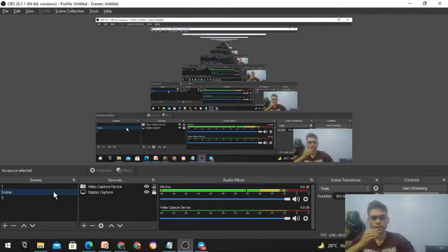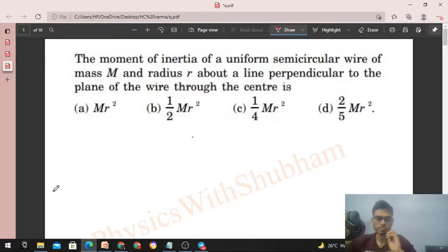Okay, hi everyone. Today let's discuss this interesting problem. It says the moment of inertia of a uniform semicircular wire of mass M and radius r about a line perpendicular to the plane of the wire through the center. So it's a semicircular wire and we need to find the moment of inertia about an axis perpendicular to this plane and passing through the center, something like this is the axis.